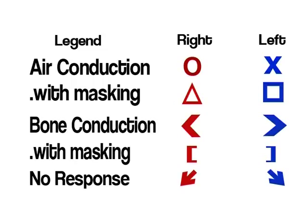Down arrows us waqt istemal hote hain jab patient ya insani kaan mein bahut zyada shiddat ke saath hearing loss ho aur usme koi response nahi. To us waqt aap circle ko istemal karte hue bari down arrow red mein mark kar dete hain audiogram pe, which represents no response. Isi tarah left mein bhi blue down arrow cross ke saath istemal karte hue no response show kiya ja sakta hai.